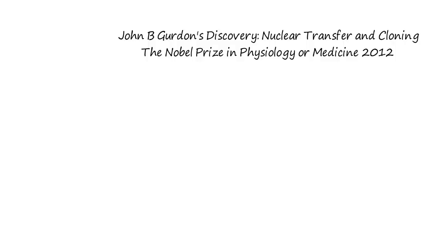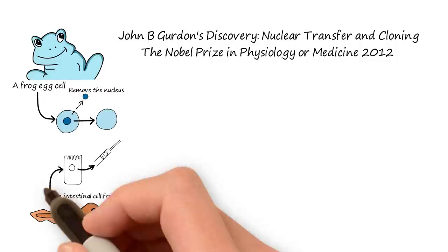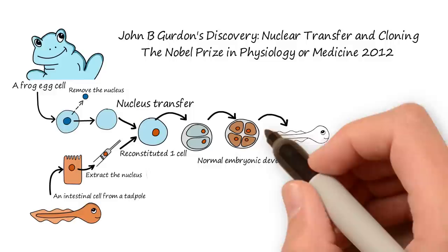The original experiments we did involved taking the nucleus out of a specialized cell and injecting it into an unfertilized egg. The combination of the egg and the transplanted nucleus could eventually make a completely normal individual.